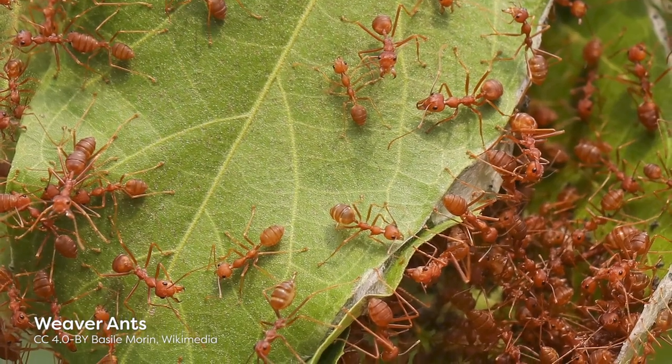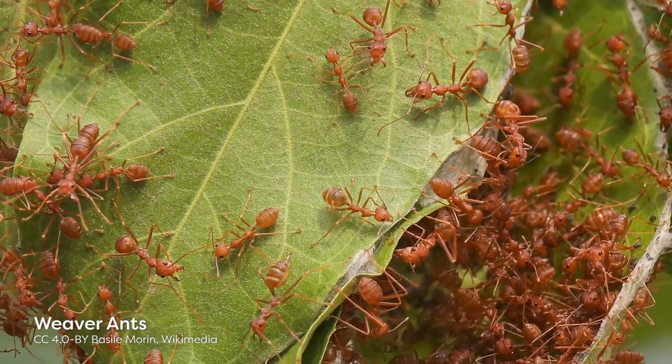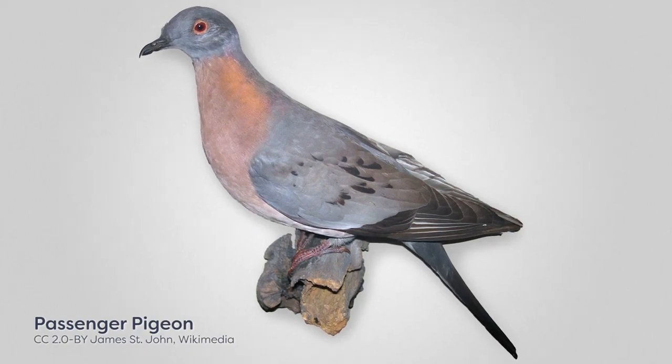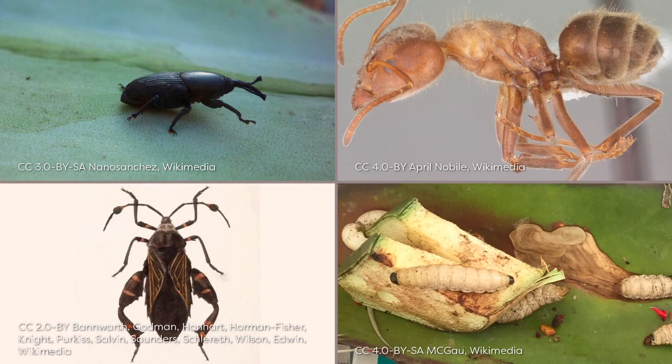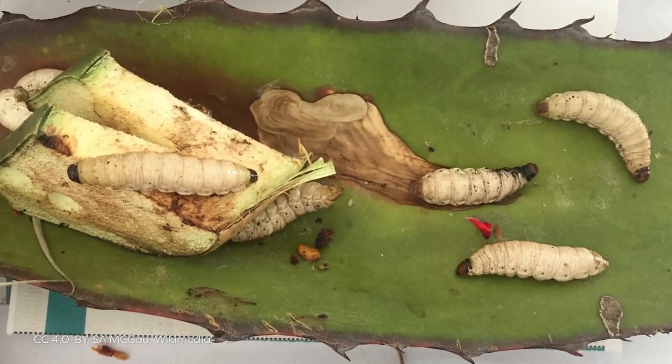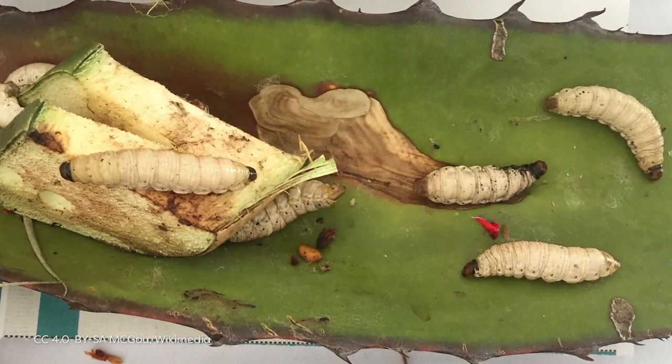Some insects are threatened in part from over-harvesting for medicinal purposes. This has occurred with the weaver ant, which has many common uses in traditional Chinese medicine. Others may be threatened from over-harvest as a food source for humans. While insects can be valuable as sustainable food sources due to their high reproductive capacity, we must still exercise caution when harvesting from wild populations. Many insects are harvested as juveniles, so over-harvesting may not leave enough adults to produce the next generation. High market prices can increase harvesting efforts and exert additional pressure on these insect populations.